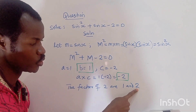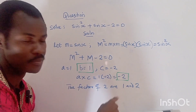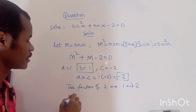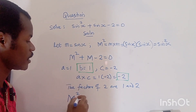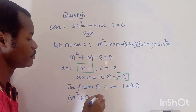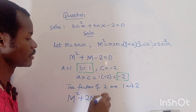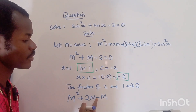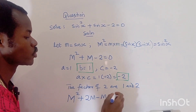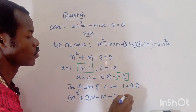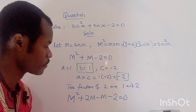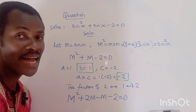So we replace the middle term plus m using two and one: we write the expression as m squared plus two m minus one m minus two equals zero.